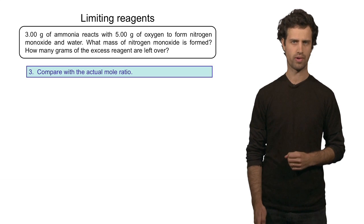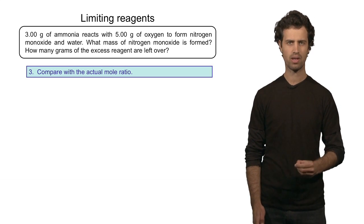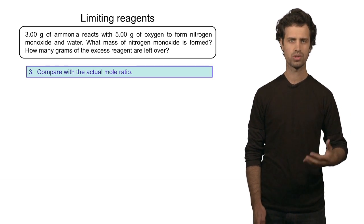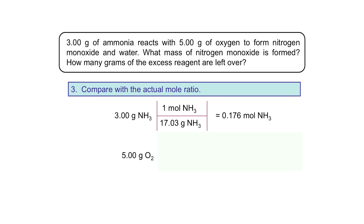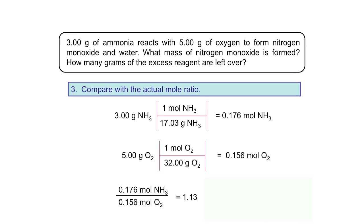The next step is to calculate the actual amount of moles. I have 3 grams of ammonia — divide that by its molar mass and we find 0.176 moles of ammonia. I can do the same for oxygen: I have 5 grams of oxygen, divide that by its molar mass of 32 grams per mole, and I find 0.156 moles of oxygen. The ratio between these two numbers is 1.13, so the actual mole ratio is 1.13.